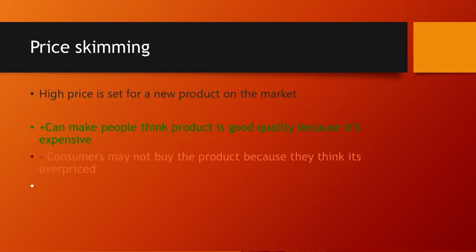Price skimming is when a high price is set for a new product on the market. For example, Apple phones — when the product is launched, the prices will be very high, but as time passes, the price will be reduced. An advantage is that it can make people think the product is of good quality because it is expensive. A disadvantage is that consumers may not buy the product because they think it's overpriced.